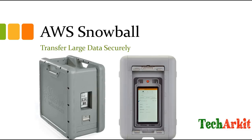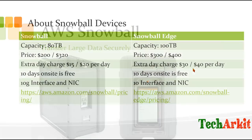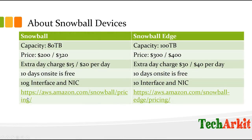What they do is send you the Snowball device. There are two types: the Snowball, which has 80 terabytes in capacity, and the Snowball Edge, which has 100 TB in capacity. This is a single device, but they also support Snowball clustering.